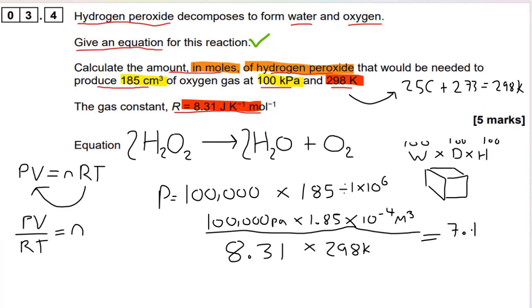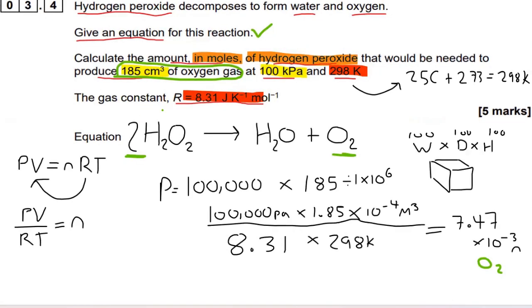Right, now that equals 7.47 times 10 to the minus 3. Lovely jubbly. And that's moles. Moles of what? Well, that's moles of oxygen because they gave us, look I'm circling here, they gave us the volume of oxygen. So we've worked out the moles of oxygen with this ideal gas equation.